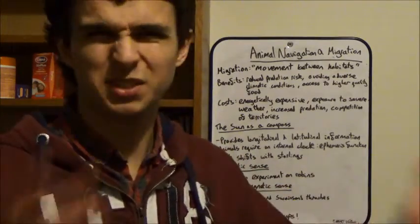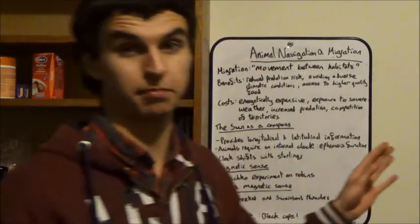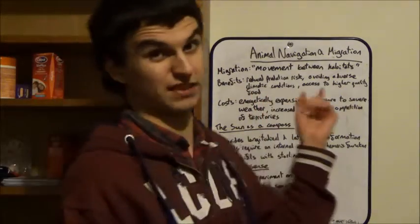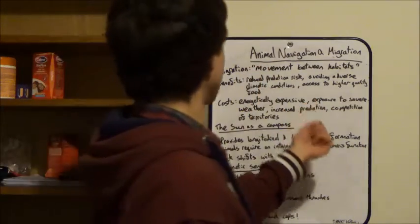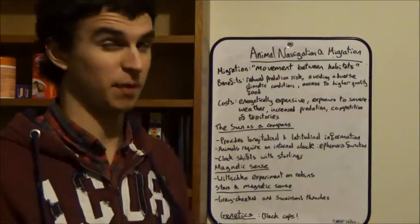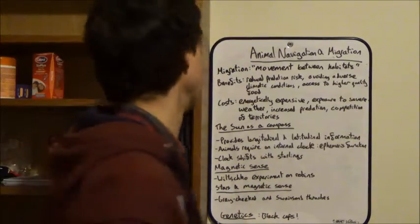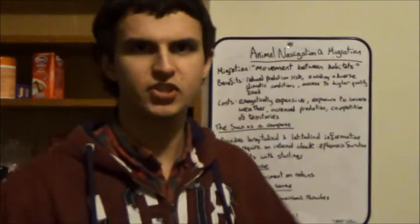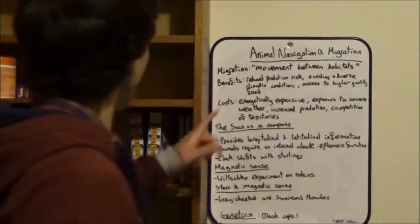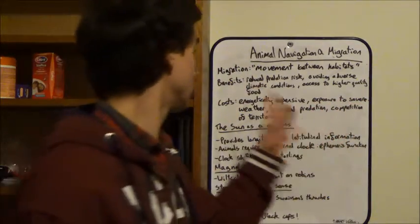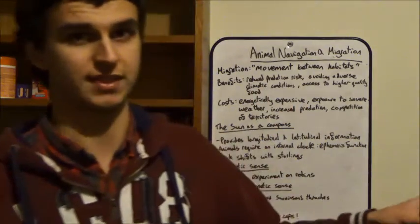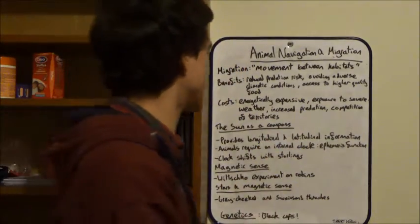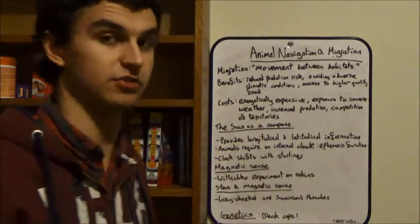Now obviously it has a lot of benefits to it otherwise it wouldn't happen. So all the benefits. Reduced predation risk in the place where you're going from. Avoiding adverse climatic conditions. That's a good reason why many birds in particular migrate. Access to higher quality food as well. But anything with its benefits is going to have its cost. It's a general trend which we've seen quite a lot in this series. So the costs are it's energetically expensive you know, to move. I mean, moving houses, you know, tiring enough. So imagine moving between continents every year of your life. Exposure to severe weather whilst you're migrating. You're also exposed to predation whilst you're migrating. Let's say you get really tired that means you're probably weaker. So a nice easy target for a predator. And also there could be competition of territories in the place where you're going.